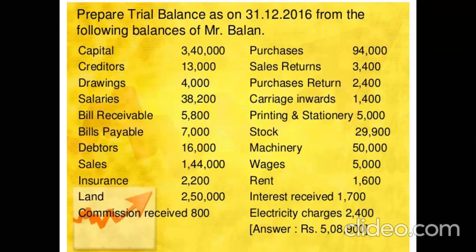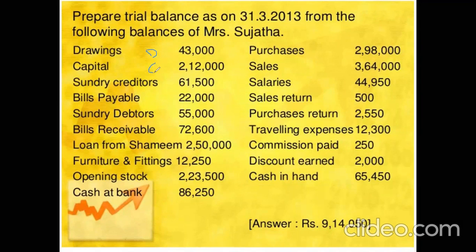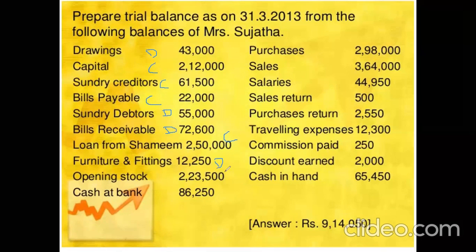For a second example, there is again a list of balances to be bifurcated into debit and credit based on their characteristics. Drawings — expense, debit balance. Capital — liability, credit balance. Creditors — liability, credit balance. Bills payable — liability, credit balance. Debtors — asset, debit balance. Bills receivable — asset, debit balance. Loan from Shamim — liability, credit balance. Furniture and fittings — asset, debit balance. Opening stock — asset, debit balance. Cash at bank — asset, debit balance.